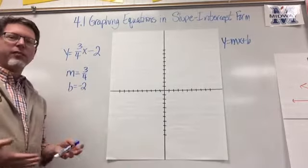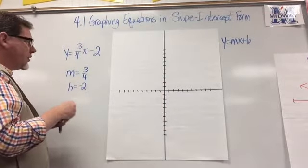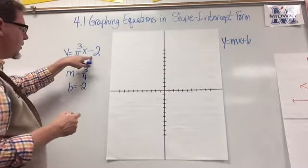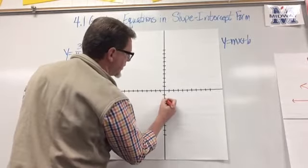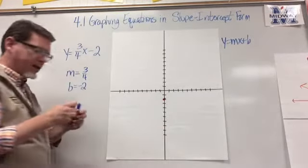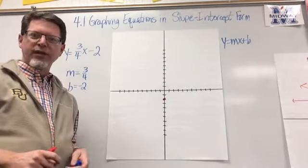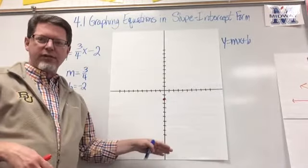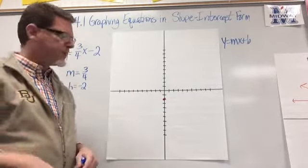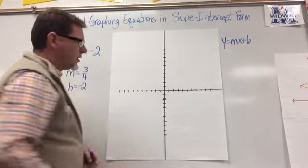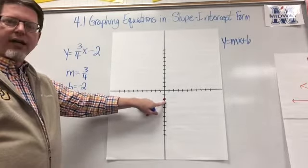I always start with my y-intercept. I'm going to use a red marker and graph this in red. My y-intercept is negative 2, so on the y-axis I plot negative 2 — that is the first point on my line. That's where I'm going to start, because the y-intercept is where the line crosses the y-axis, at negative 2.